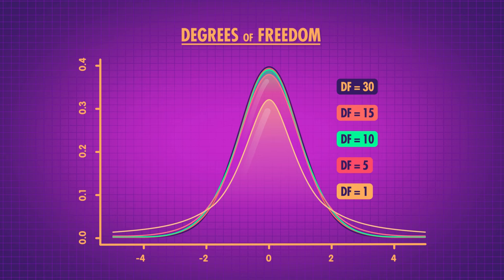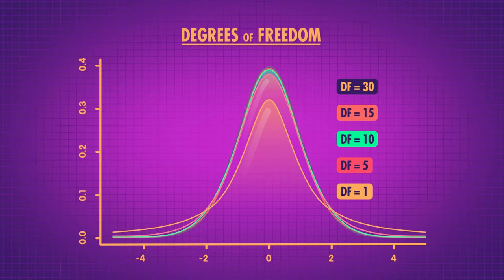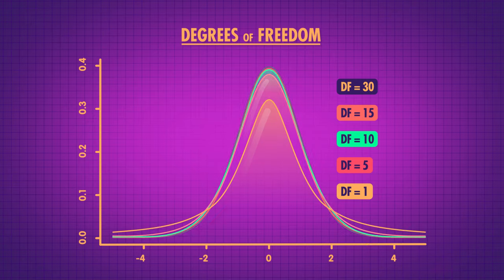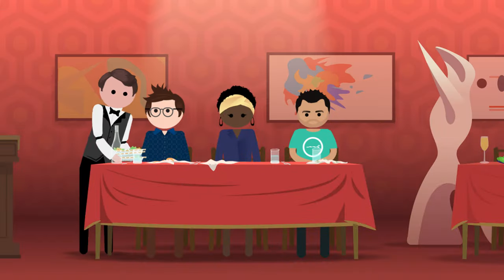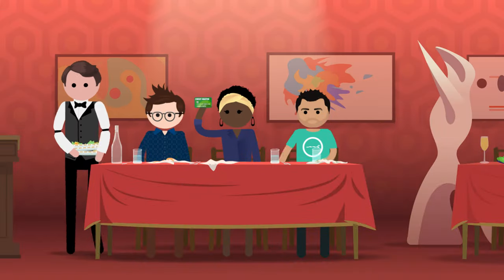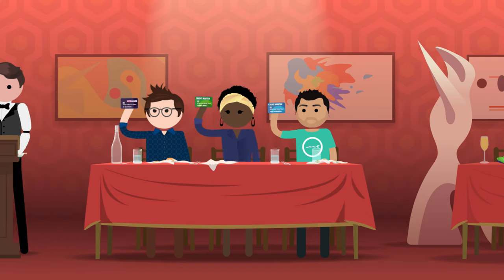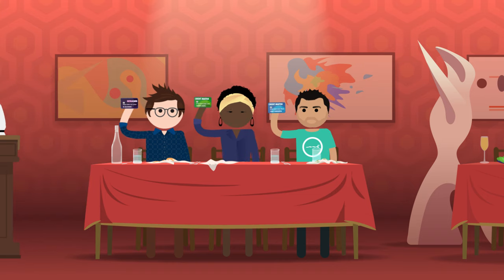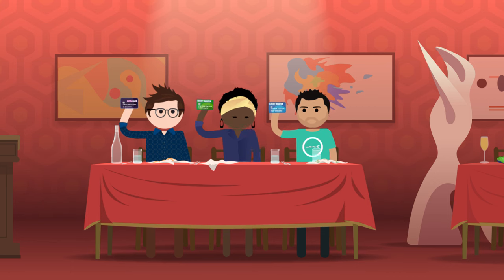We choose our t-distribution based on the number of degrees of freedom that we have. Degrees of freedom are the number of pieces of independent information in our data. Let's go to the Thought Bubble. After dinner with two friends, you all pull out your credit cards to split the bill. Your friend Carmen, who's a bit of a math savant and a bit of a show-off, notices that if you took your credit card numbers as a single 16-digit number...